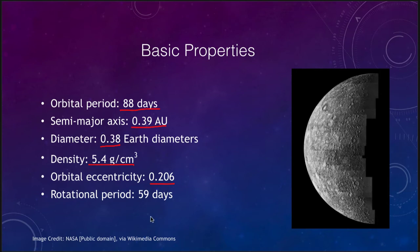Its rotational period is 59 days, so it takes 59 days for it to spin on its axis once relative to the stars.